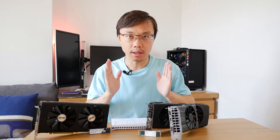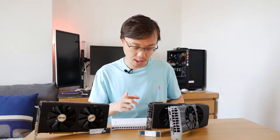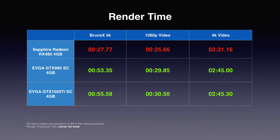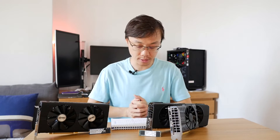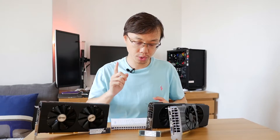Okay, here come the results. For render time, as you can see from the table, you guys probably expected the RX 480 to outperform both NVIDIA graphics cards — and it did. The RX 480 rendered just under 30 seconds for the Bruce X 5K, and the 4K video rendered just over 2 to 2.5 minutes. The GTX 980 SC and the 1050 Ti both rendered in longer times than the RX 480. You guys probably think that's expected.